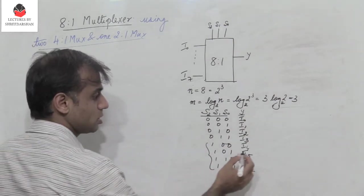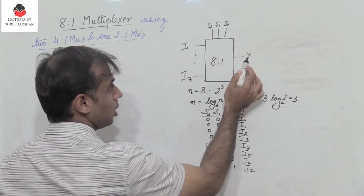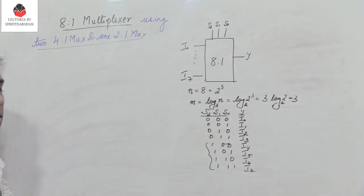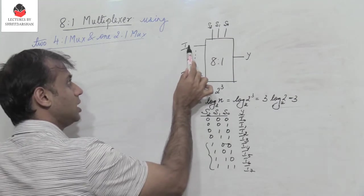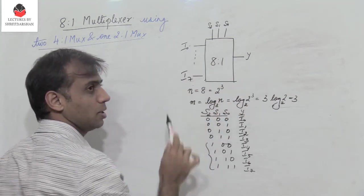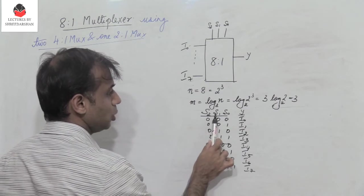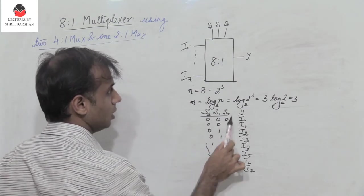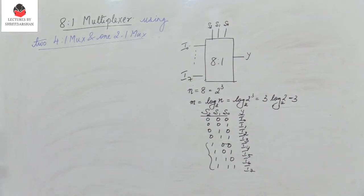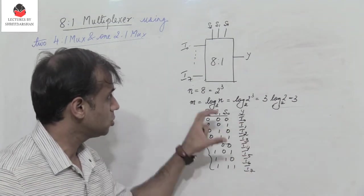With these 3 select lines we can write the truth table. When the select lines are 0 0 0, the output Y is tied to input i0 — whatever appears at i0 will also appear at the output. When S2 S1 S0 is 0 0 1, i1 appears at the output, and so on.